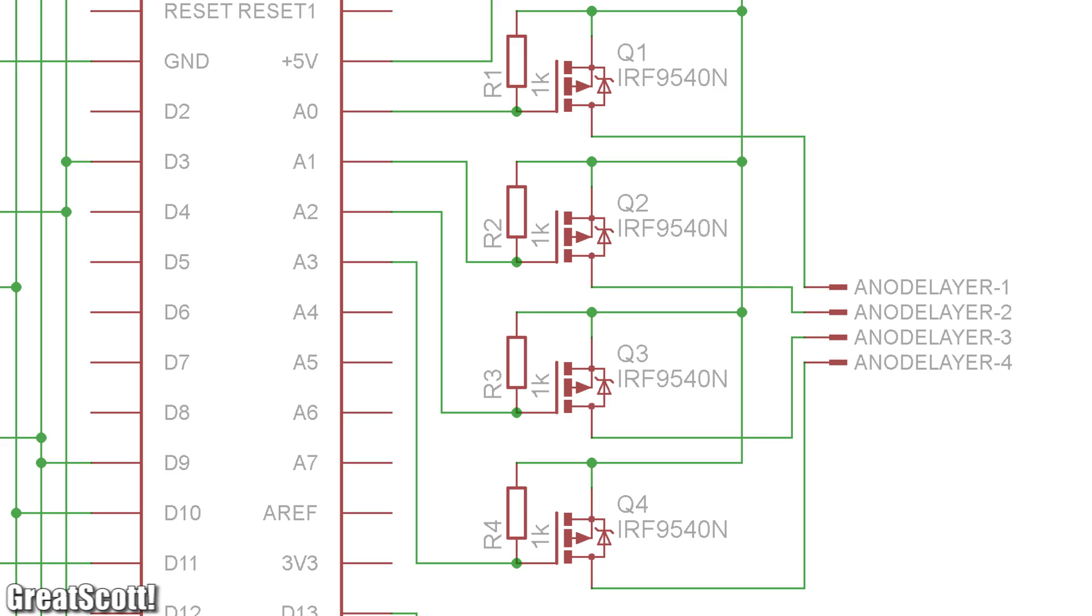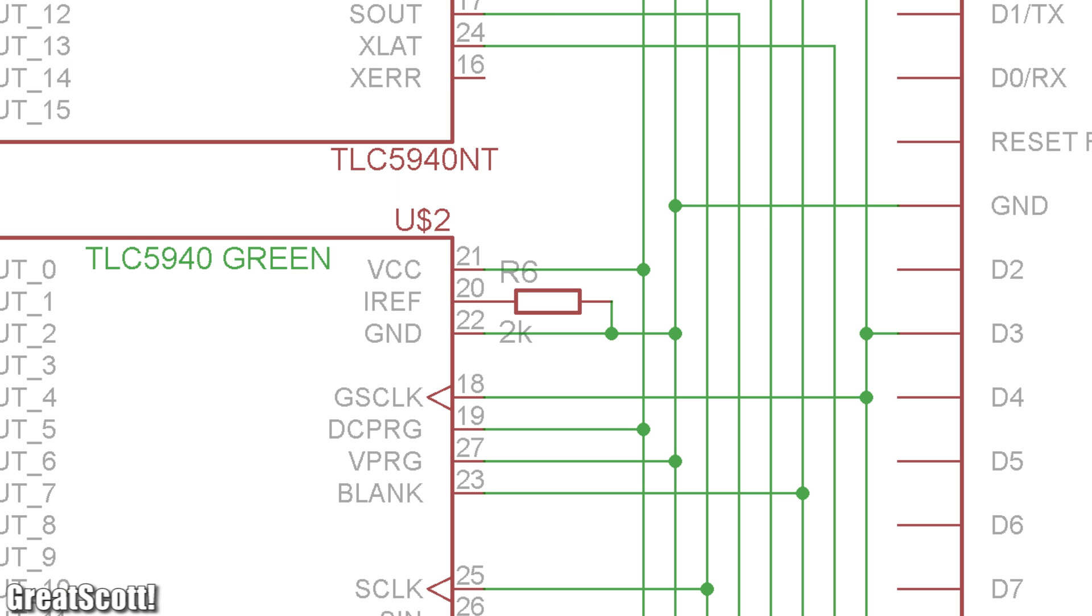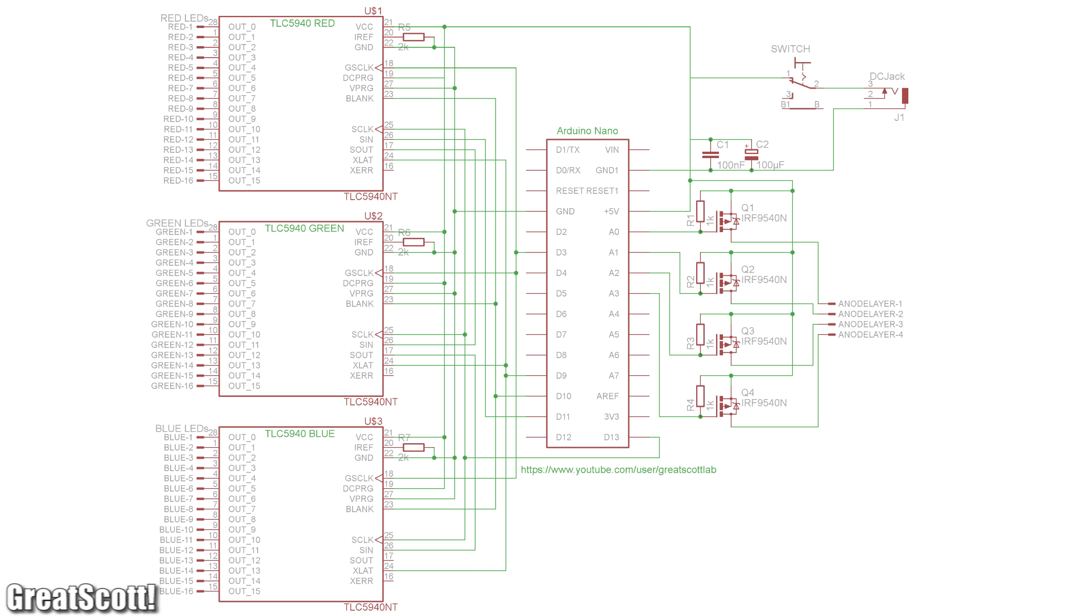I solder the 1K resistor between gate and source of each MOSFET. The 2K resistor connects to pin 20 and 22 of each TLC. The rest of the wiring is explained in this schematic.